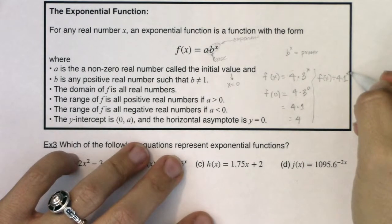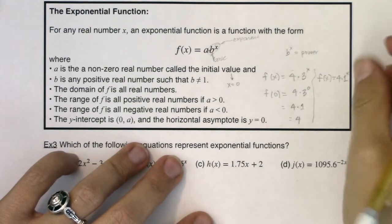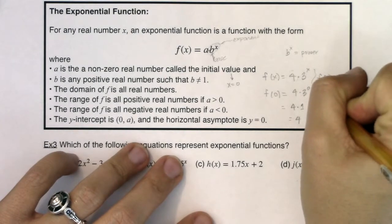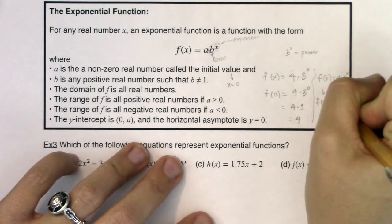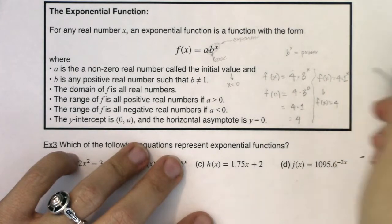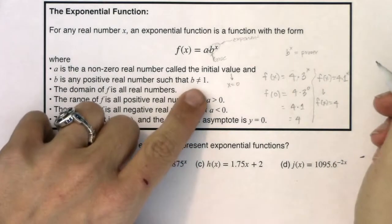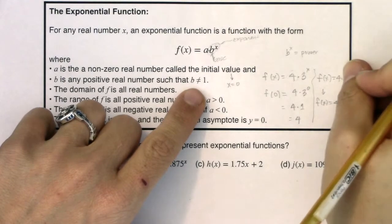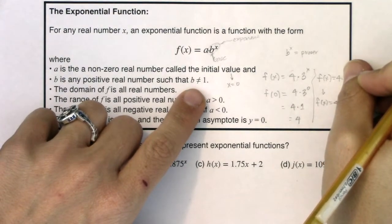Why do we say b is any positive real number other than 1? I want you to see what would happen if b was 1. What if f(x) was 4 times 1 to the x? Well, 1 to the x is always 1. Because 1 to the 1 is 1, 1 squared is 1, 1 cubed is 1, 1 to the 4th is 1, 1 to the 1 half is 1. It's always going to be 1.